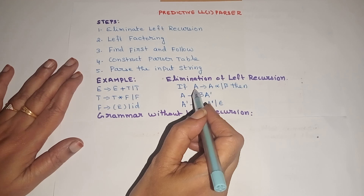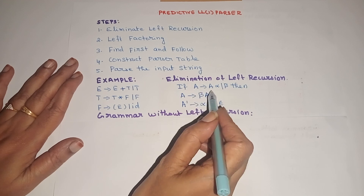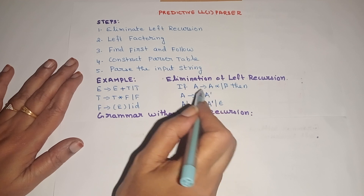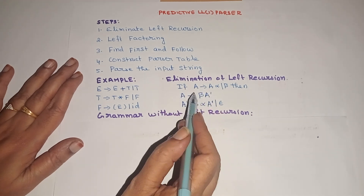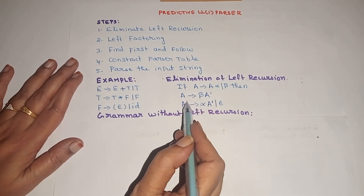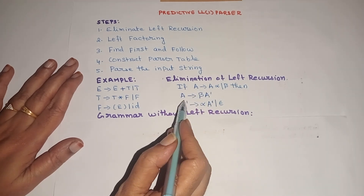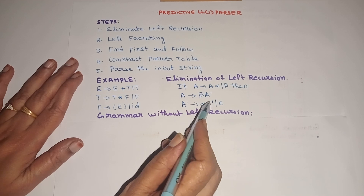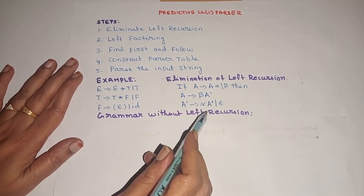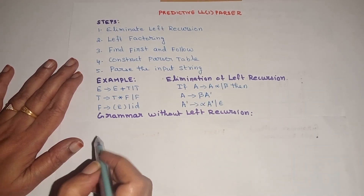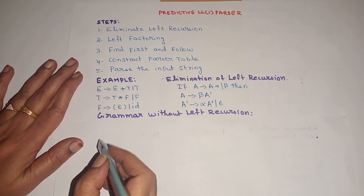We can note that here on the left hand side we have A, and the right hand side first symbol is also A. To eliminate this left recursion, we have to rewrite this production in the form of 2 rules. First rule: A tends to beta A-dash. Second rule: A-dash tends to alpha A-dash or epsilon.